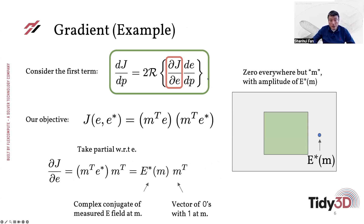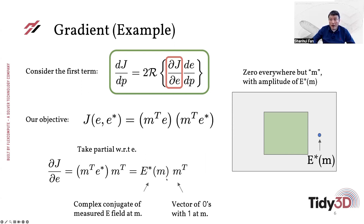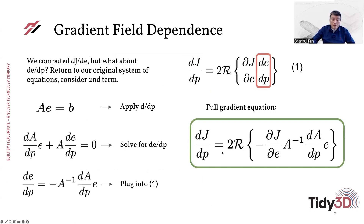First, consider the derivative of the objective function to the electric field. In our case, this is a simple product of the electric field and its complex conjugate. If you take the derivative with respect to the electric field, what you end up with is just the complex conjugate of the electric field. These are electric field values already determined in the simulation — where you put the source in the computational cell and compute the electric field everywhere — specifically the computed electric field at the monitor point taking the complex conjugate.